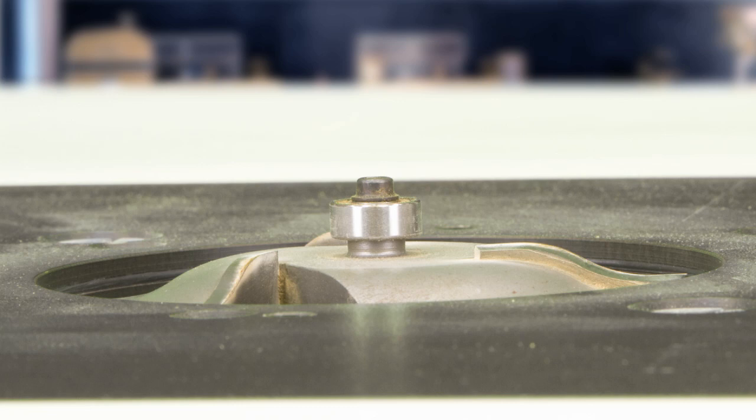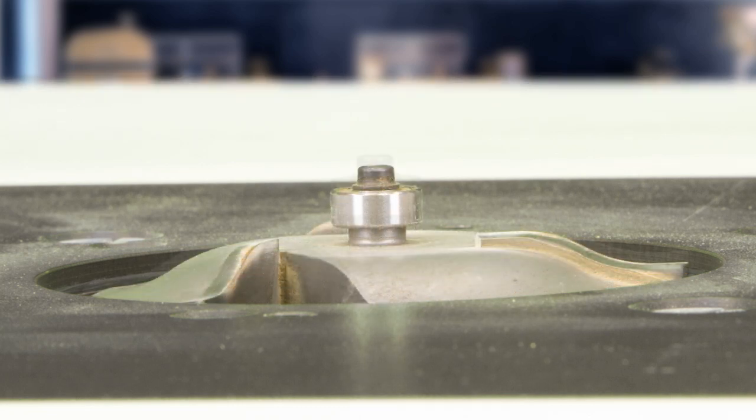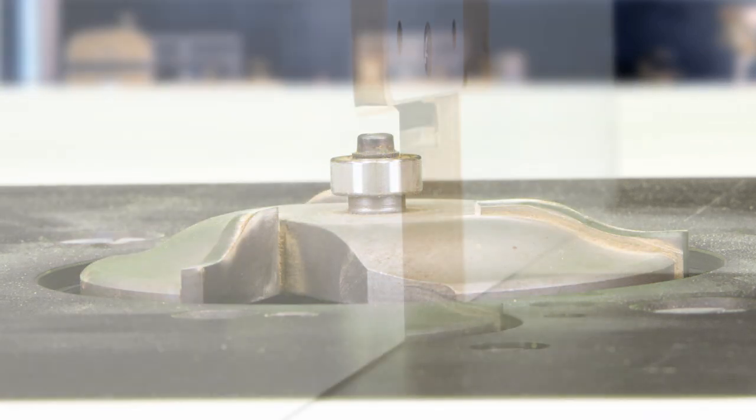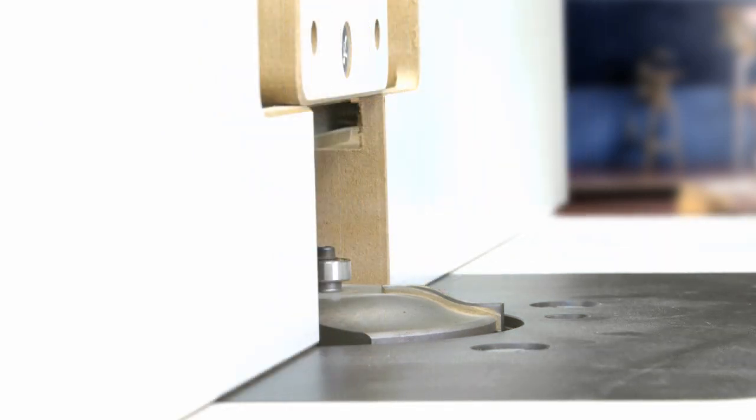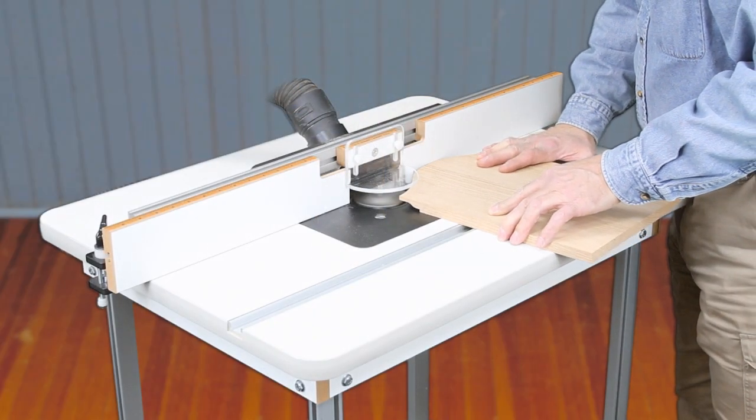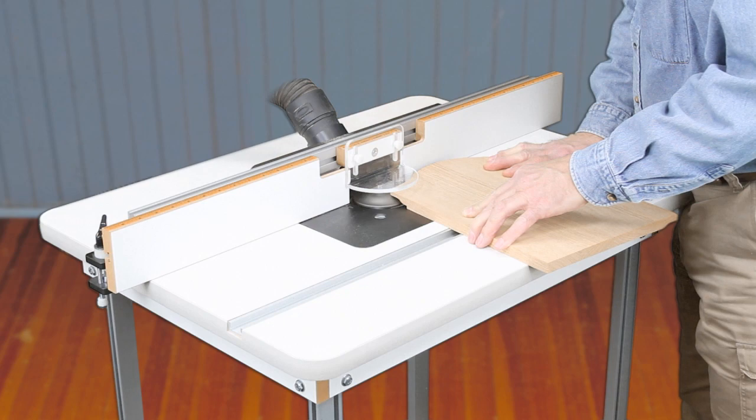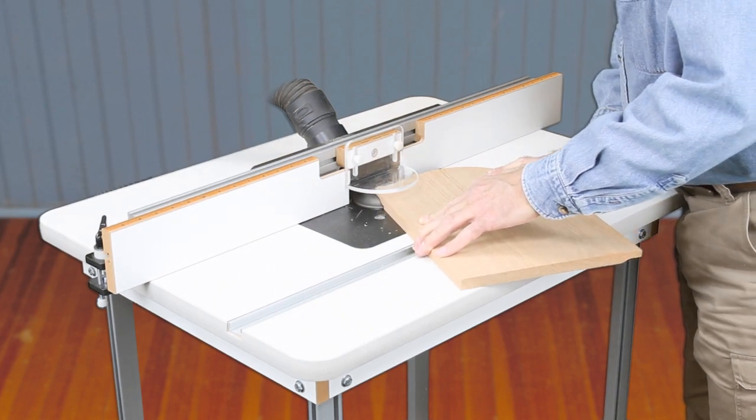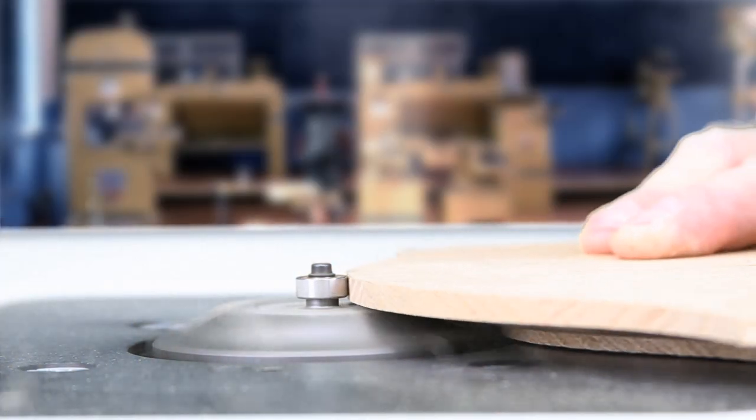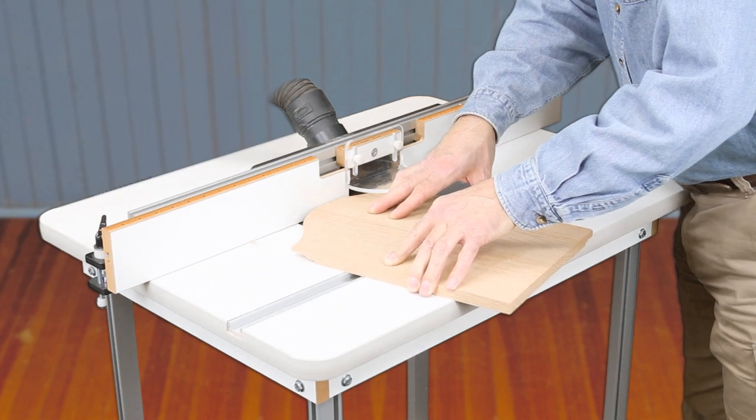Depending on your panel style, incremental passes can be made by either raising the bit or moving the fence. For straight panels, set the fence at the finished position and make the cuts by incrementally raising the bit. Or, set the bit at its full height and move the fence back incrementally. For cathedral panels, you must raise the bit incrementally. Set your router fence back enough to compensate for the rise of the panel. Start each pass on the end grain of the panel, rotating it 90 degrees until all sides are cut. Then repeat until the full profile is cut.